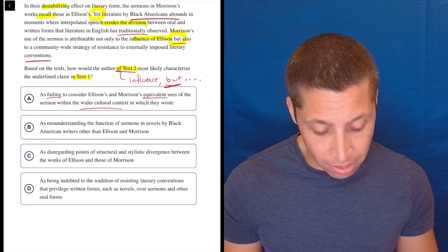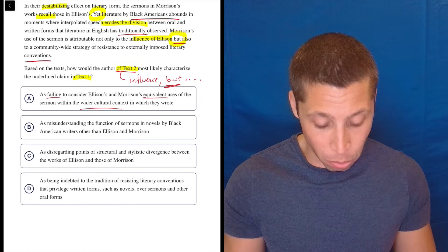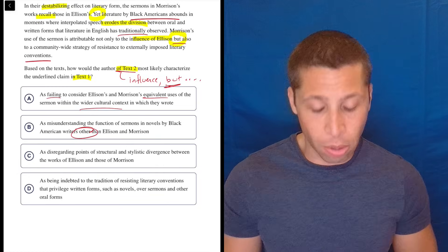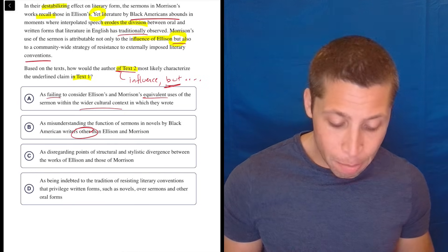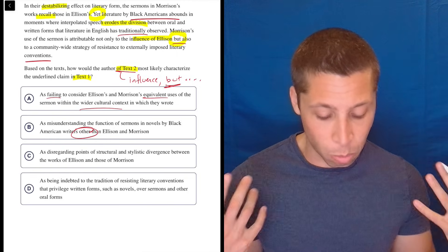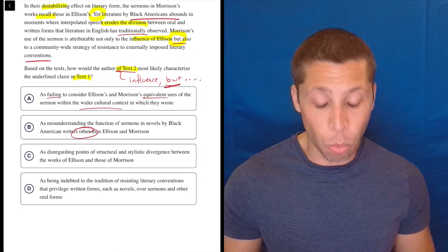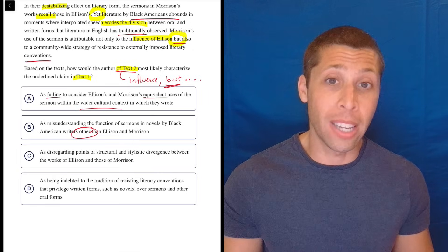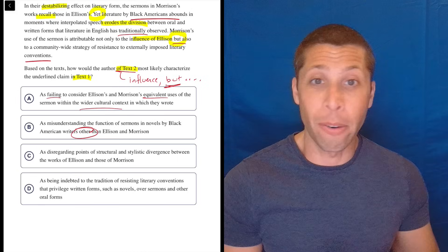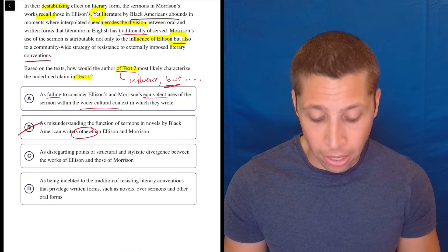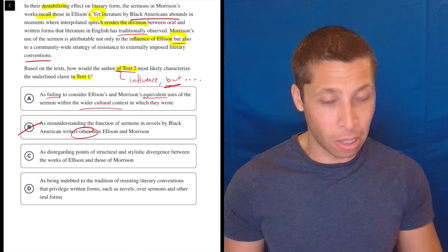As misunderstanding the function of sermons and novels by black American writers other than Ellison and Morrison. Well, they did talk about Ellison. They did talk about Morrison. But this choice has just got the wrong main character. It's shifting us away from both of those people to other people. And yeah, passage two is kind of talking about literature by black Americans more generally, but it doesn't seem like that's the person's main point. Generally speaking, a word like other is a strong word that usually indicates traps because it's taking us out of whatever the topic is in the passage and talking about something other than what the passage was talking about. So I feel actually pretty confident getting rid of that choice.